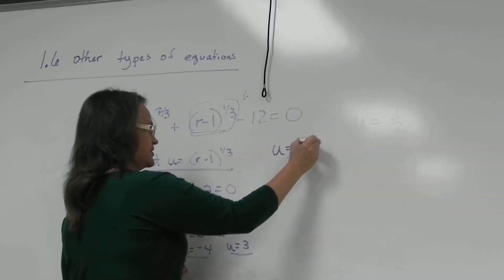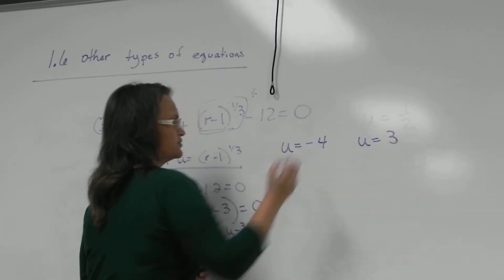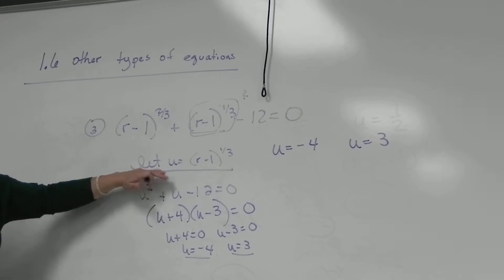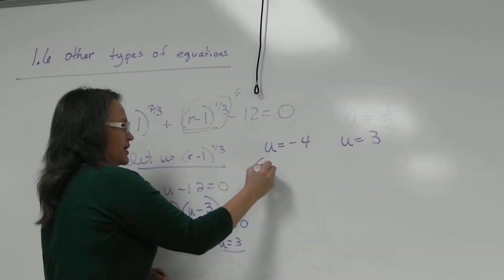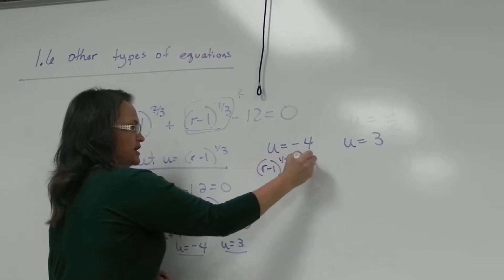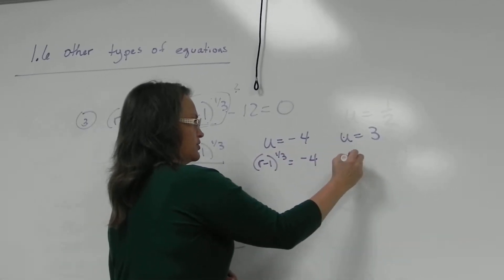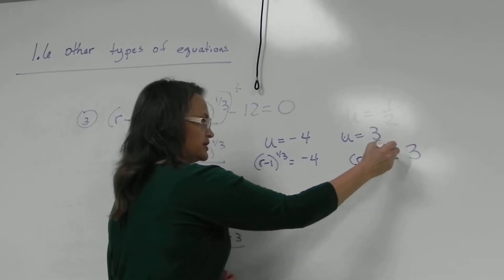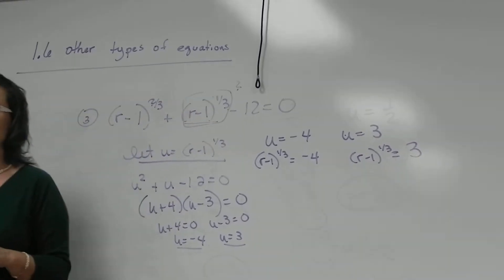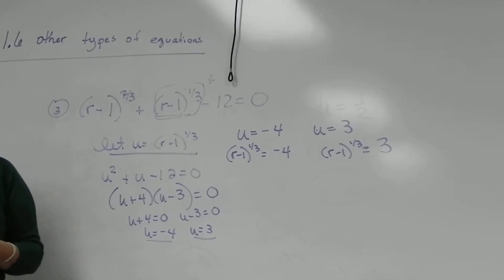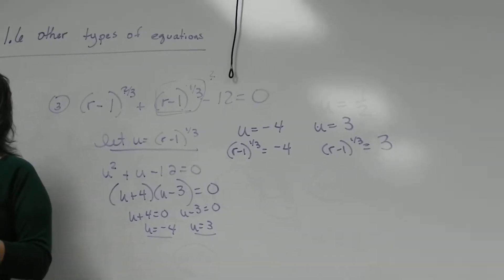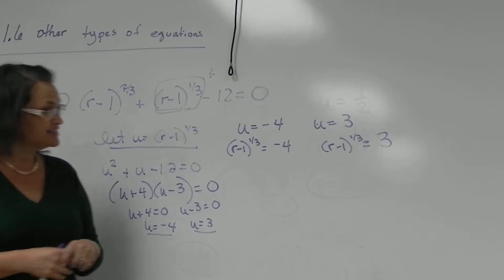All right, so we have u as -4 and u as positive 3. So now put in whatever we defined u as, put it back in. So it's (r-1)^(1/3) = -4. Again here, (r-1)^(1/3) = 3.